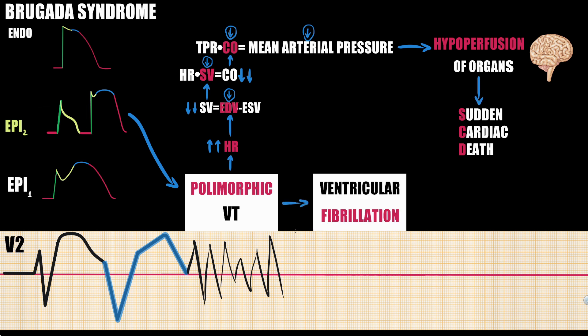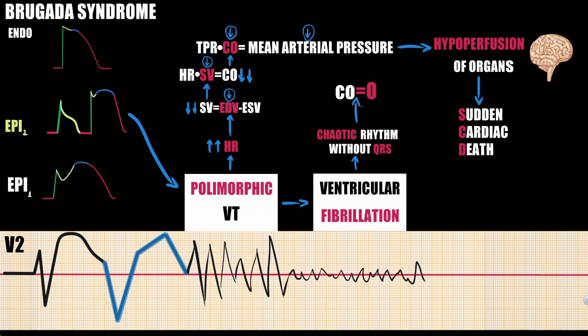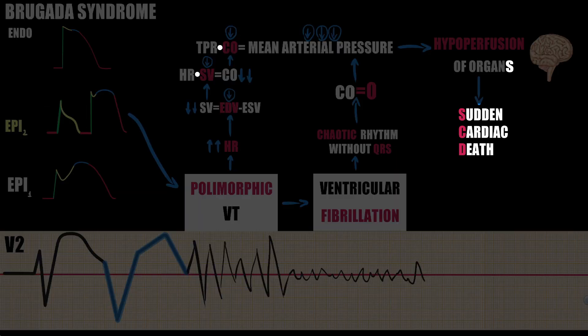Polymorphic ventricular tachycardia can degrade to ventricular fibrillation, characterized by a chaotic rhythm with undulations that are irregular in timing and morphology, without discrete QRS complexes on the surface ECG. Ventricular fibrillation creates no cardiac output, leading to a rapid drop of mean arterial pressure and, as a result, sudden cardiac death.